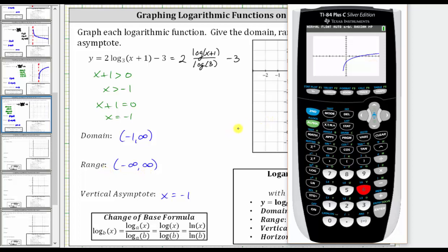And now to graph the function on our coordinate plane, we need to find some convenient points if possible, but we'll do this using the table of values. Let's press second window for the table set.